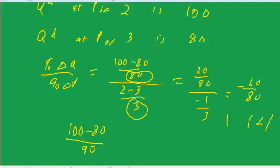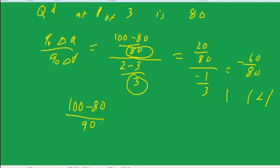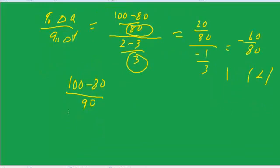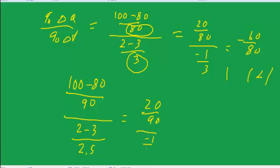And then we do the same thing with the percent change in price. We do 2 minus 3 over the average of 2 and 3, or 2.5, so that becomes 20 over 90 over minus 1 over 2.5, which equals 50 over 90. You're still having an elasticity that is less than 1, so we've got an inelastic demand.